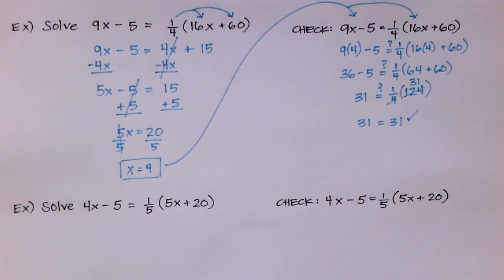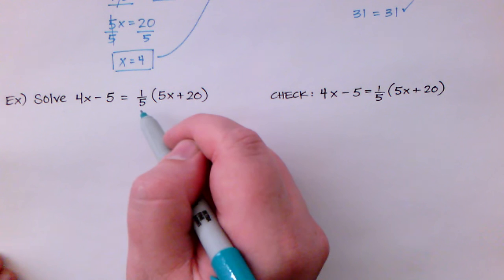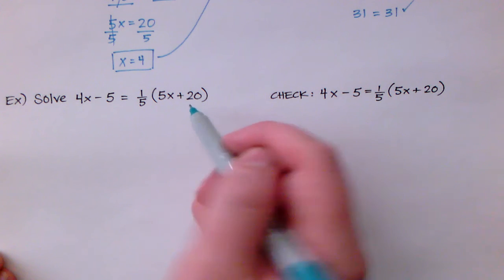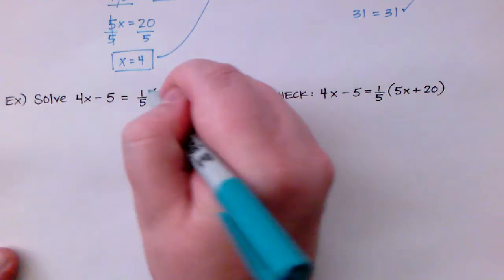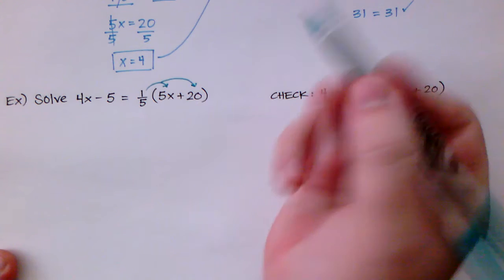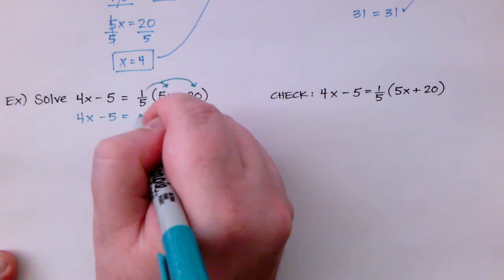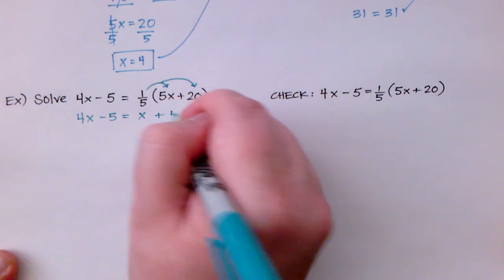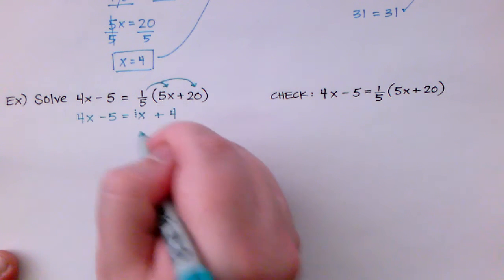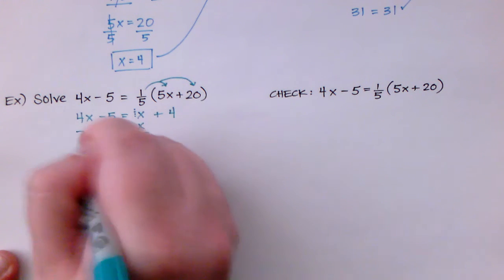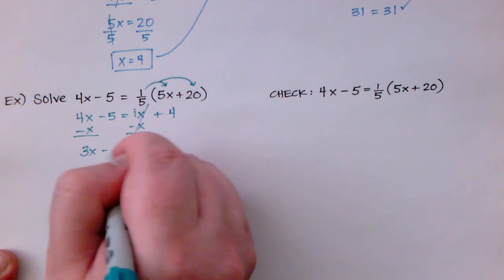Let's do one more very similar to this. I have it down there already. Solve 4x minus 5 which is equal to 1 fifth, another fraction, times the quantity 5x plus 20. So remember I told you if you wanted to you can multiply both sides by the reciprocal by 5 or you could just multiply straight through using the distributive property which is what I'm going to do. So I'm going to rewrite this. 4x minus 5 is now equal to 1 fifth times 5 is just the number 1x plus 20 times 1 fifth is the number 4. That looks pretty easy. Remember there's an invisible 1 right here in front of the x. So I'm going to subtract x on both sides. Those cancel out. 4x minus 1x is 3x. Minus 5 is now equal to 4.